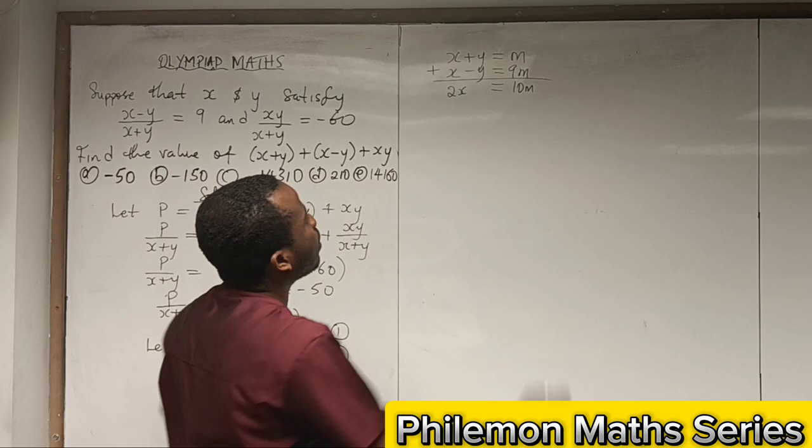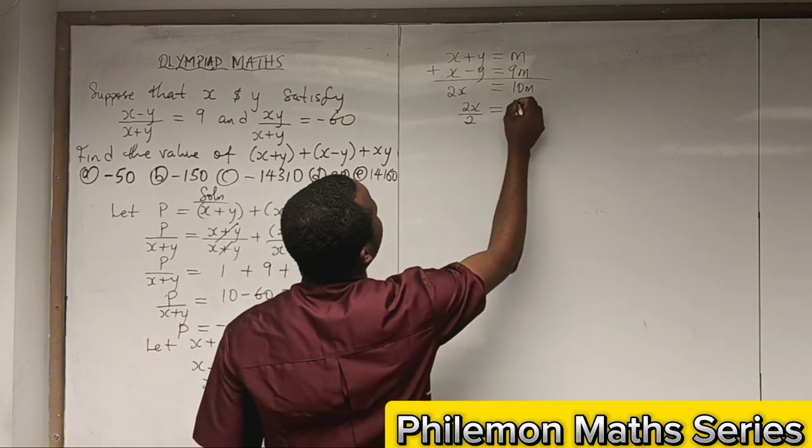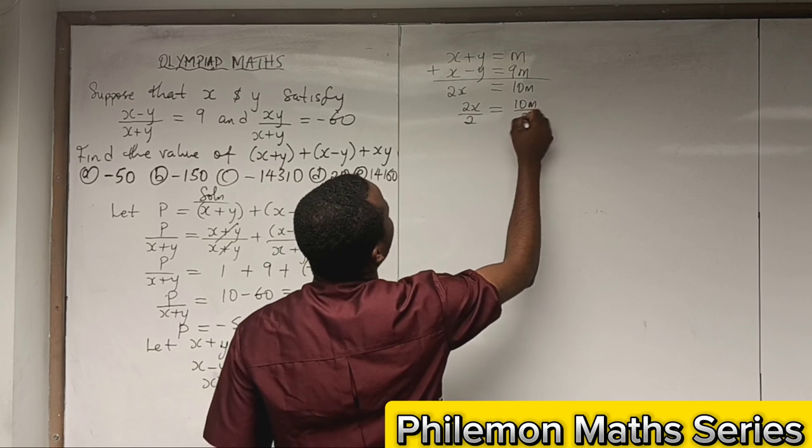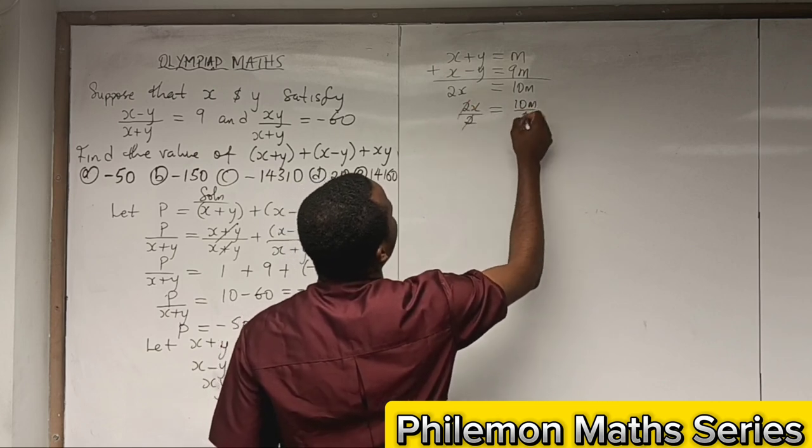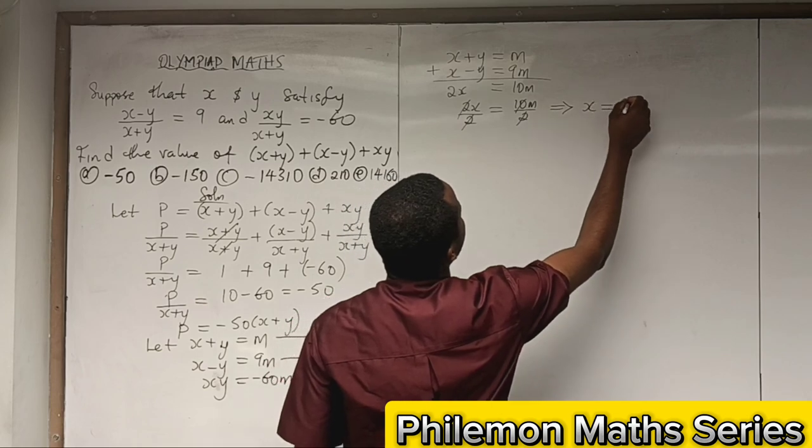We can divide both sides by 2, so x = 10m/2, which means x = 5m.